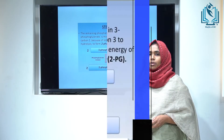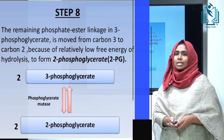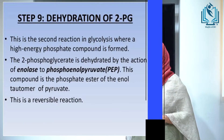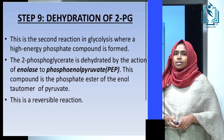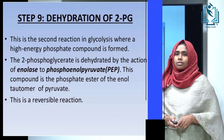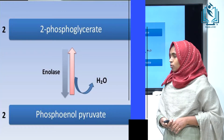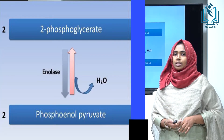In step eight, 3-phosphoglycerate is converted into 2-phosphoglycerate by the enzyme phosphoglycerate mutase. In step nine, 2-phosphoglycerate is dehydrated into phosphoenolpyruvate, which is a high-energy compound. The enzyme required is enolase, magnesium is needed as a cofactor, and water is released in this dehydration step.